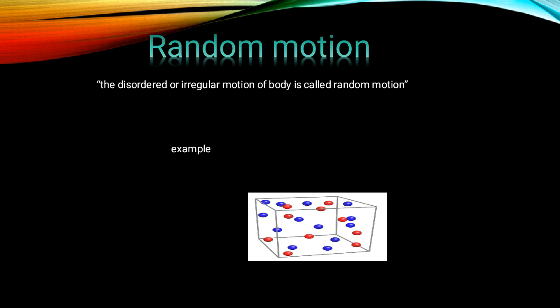Random motion: the disordered or irregular motion of a body is called random motion. Have you noticed the motion of dust particles on a water surface? Their movements are irregular and disordered. These particles are in random motion, and this is also called Brownian motion.